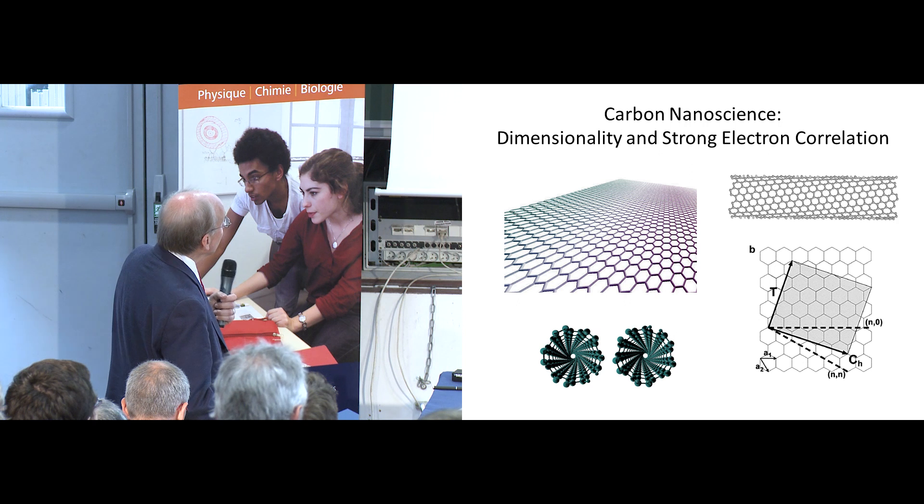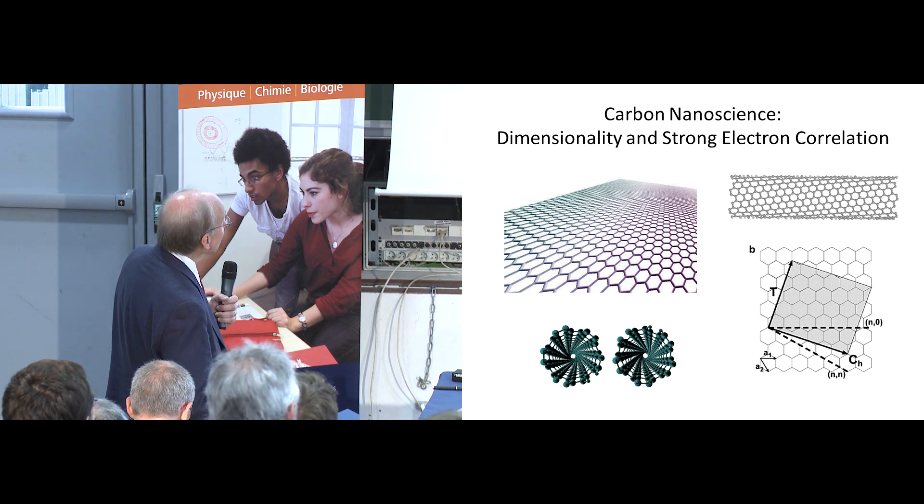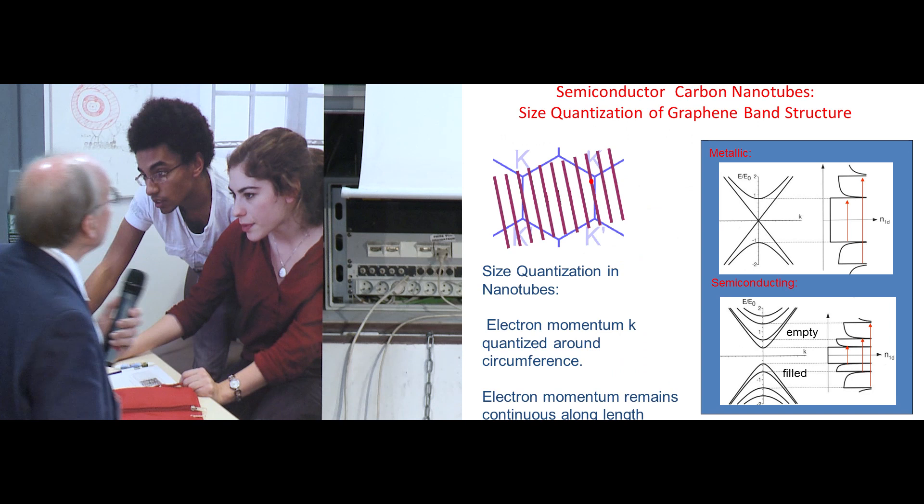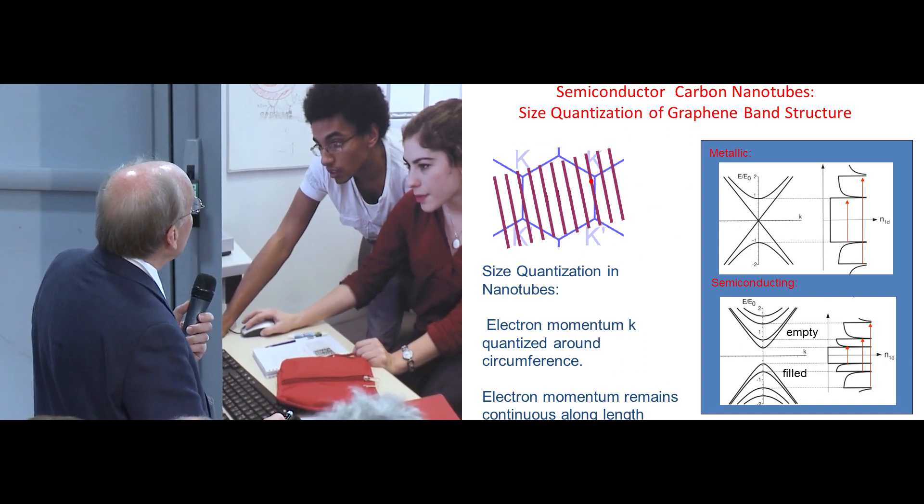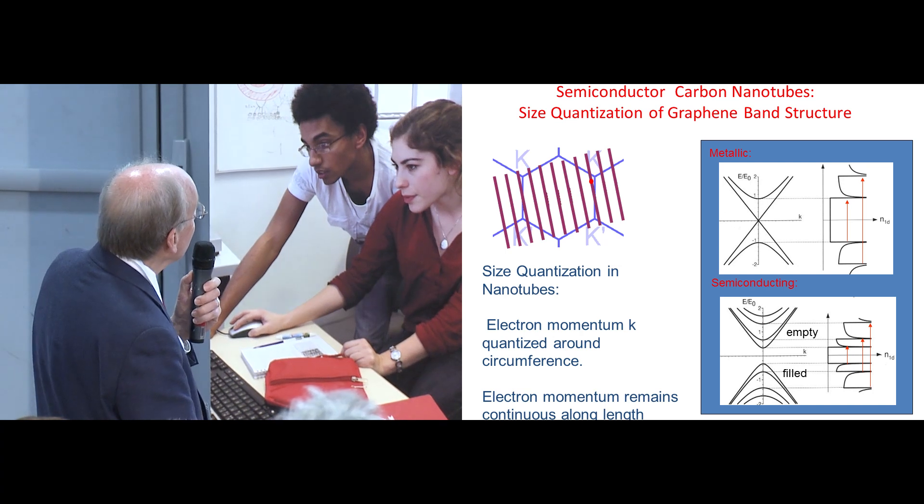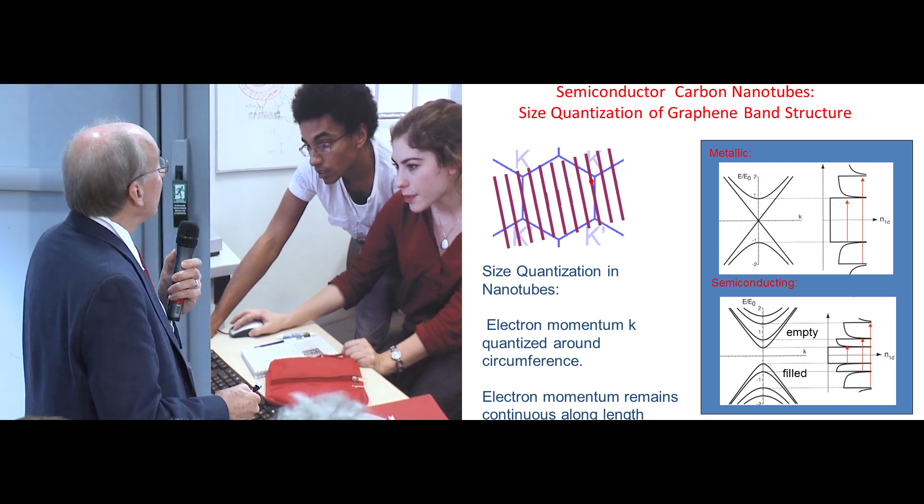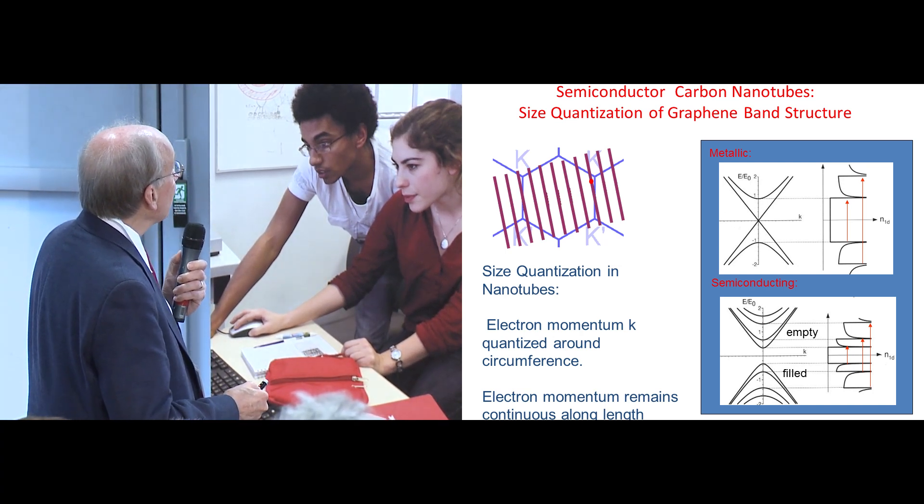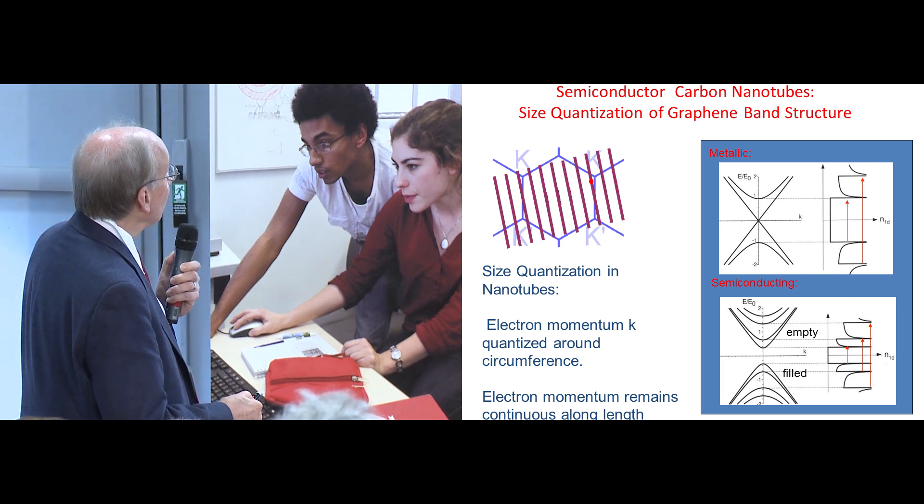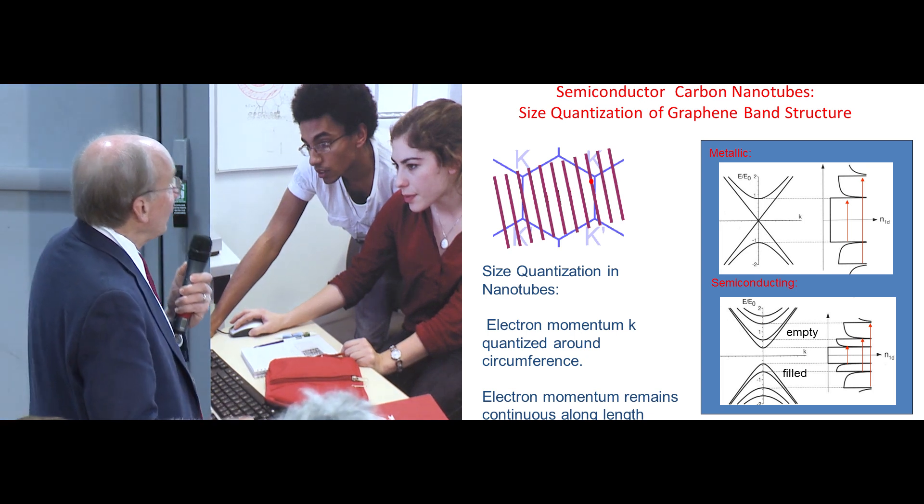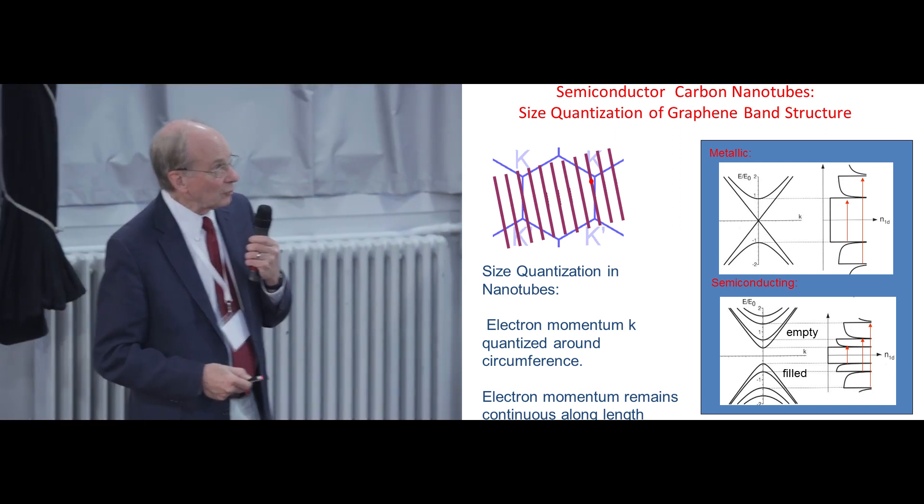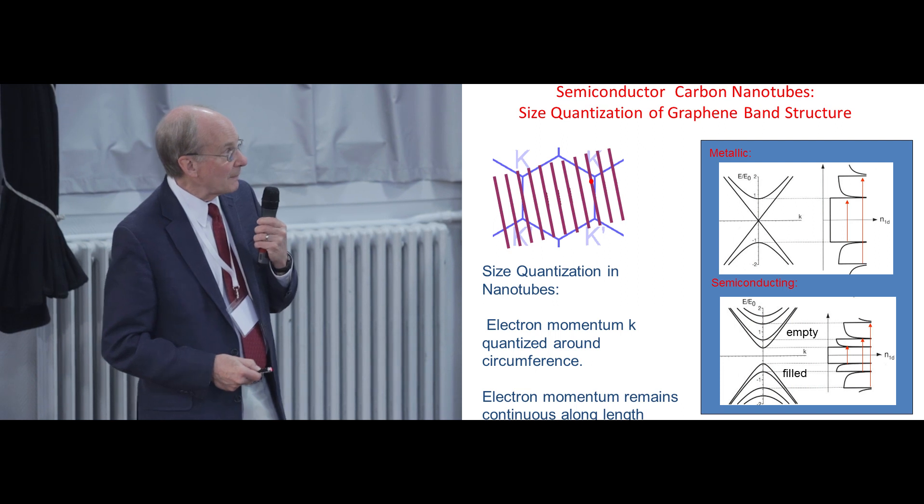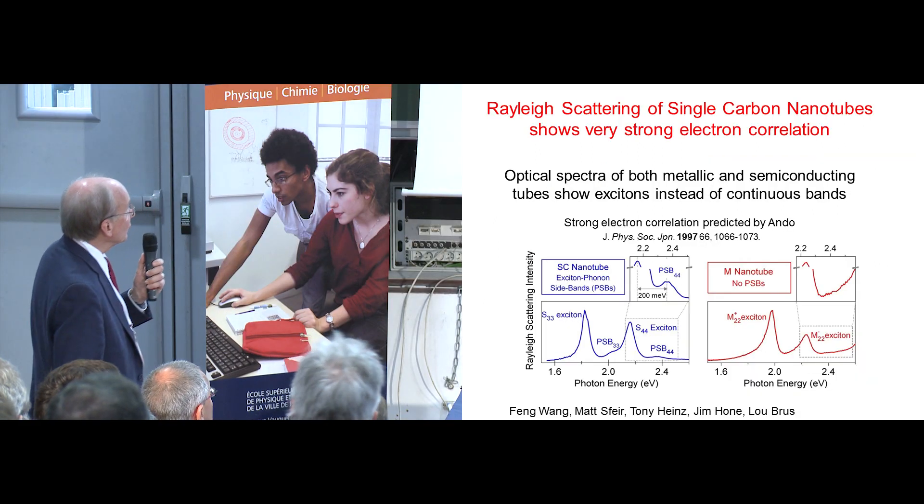These are really interesting for a number of reasons, one of which is electron correlation is very strong. This is the Brillouin zone of graphene here, and these purple lines are the allowed states of the carbon nanotube in this direction going around the circumference and this direction along the length. And so for a semiconducting tube, you have these transverse bands and you have continuous optical absorption band to band like this. So we set out to try and think about whether this was really right in the carbon nanotubes.